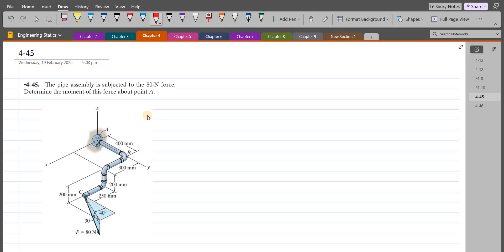Welcome back to the solutions manual. In this video we will solve problem 4-45 from R.C. Hibbeler Engineering Statics 14th Edition. According to this problem, the pipe assembly is subjected to the 80 Newton force. We have to determine the moment of this force about point A.